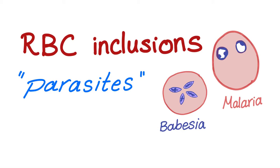What else do we have? We have red blood cell inclusions — these are stuff included in the red blood cells. Red blood cell inclusions include Howell-Jolly bodies, basophilic stippling, nucleated red blood cells, polychromatophilia, and lastly, parasites inside of the red blood cell, which is today's topic.